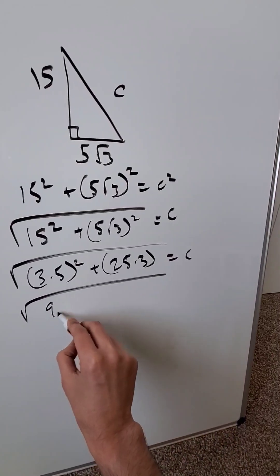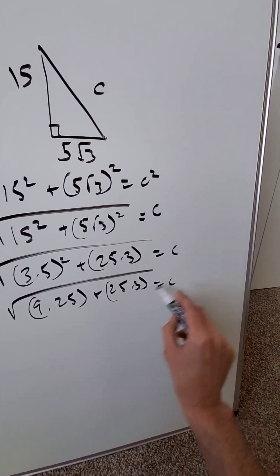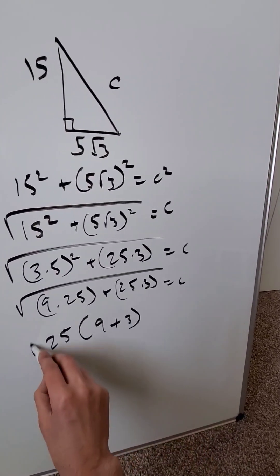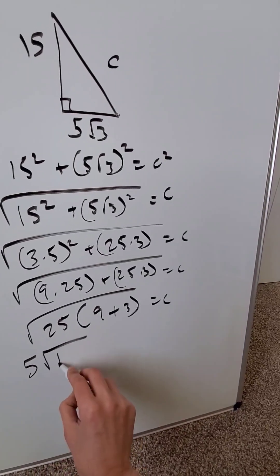here I'm having a 9 times 25 plus 25 times 3 is equal to c. I'll isolate a 25. I'll have a 9 plus 3 all within a root equal c. The 25 will come out as a 5 and then I have a root 12.